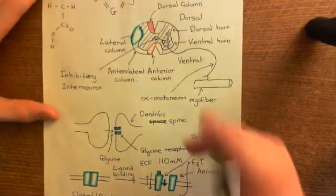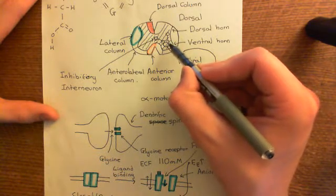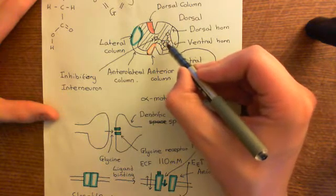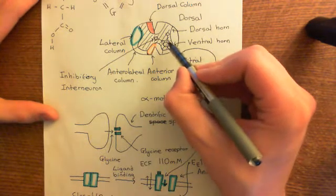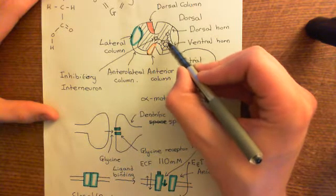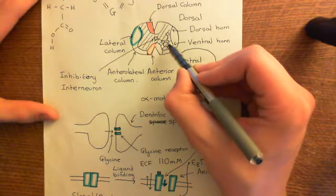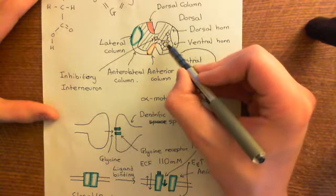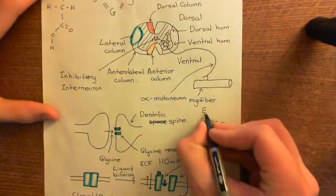If we've got a stimulatory neuron, that is going to cause what's known as an excitatory postsynaptic potential on this alpha motor neuron's membrane. It's going to open channels which will allow positively charged ions — most likely sodium ions — to move into the cell. This excitatory neuron will be releasing a neurotransmitter that opens sodium channels, allowing sodium to move in. That's a positively charged current that will make the neuron more likely to fire, and that's called an excitatory postsynaptic current, or EPSC for short.